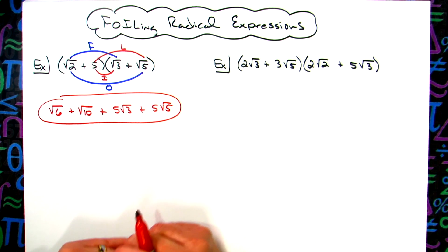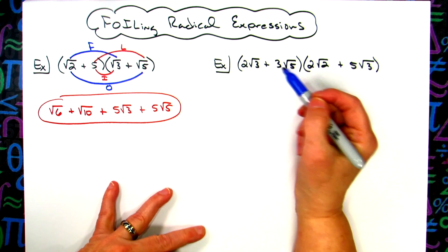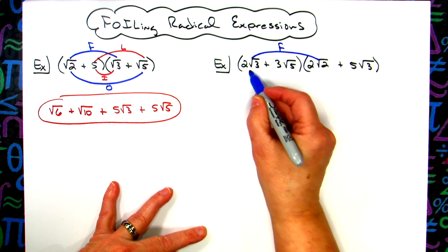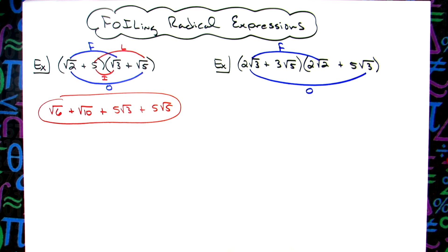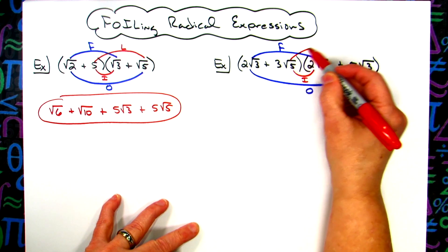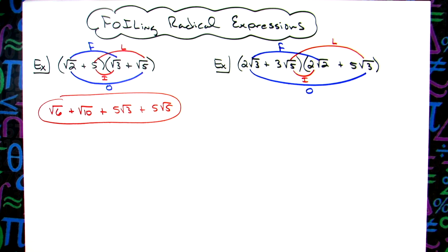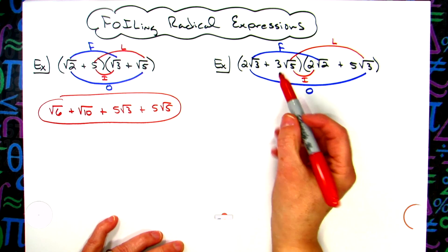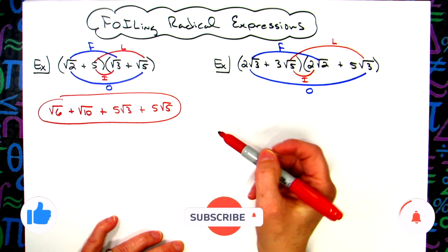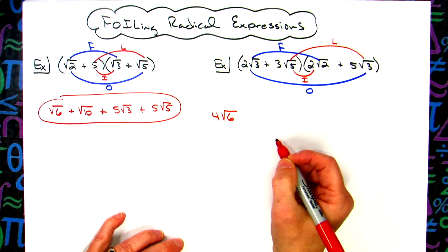We'll do the exact same thing on the second example. Let's go ahead and mark the FOIL: the first terms would be the first terms in each of the binomials, the outside terms are the far outside ones, the inside terms are right there, and the last terms are the last of each of the binomials. Multiplying those first terms, we multiply the numbers in front as well as what's underneath the radical, giving us four square root of six.